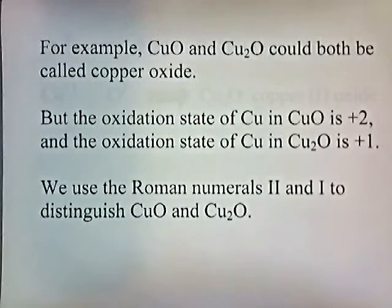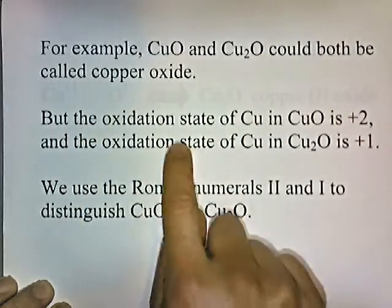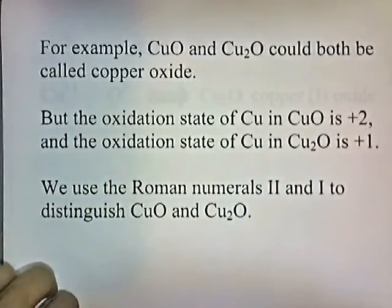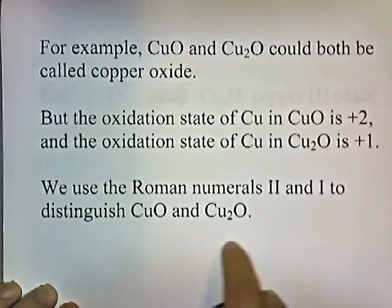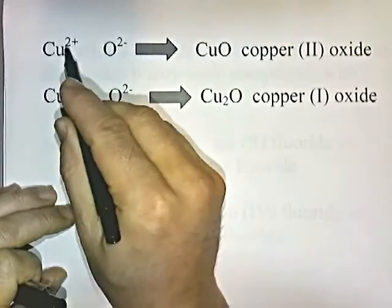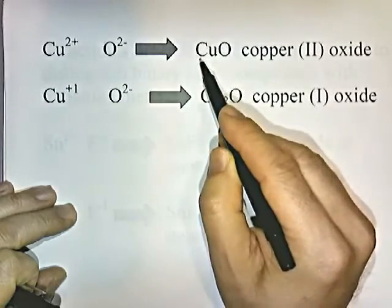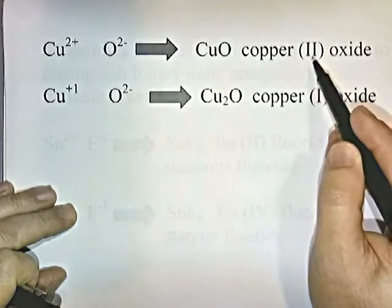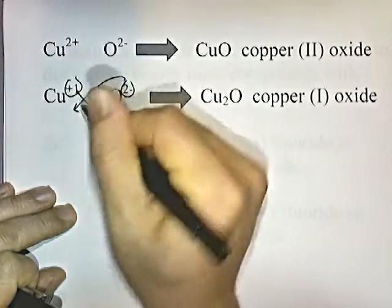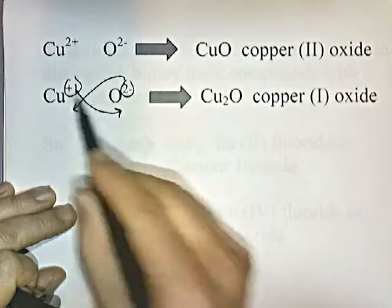For example, copper and oxygen could both be called copper oxide, but the oxidation state of copper in CuO is plus two and in Cu2O it is plus one. So we use Roman numerals to distinguish them. Copper in the plus two oxidation state combining with oxygen in the negative two state gives CuO — called copper 2 oxide. Crisscrossing the charges for copper plus one and oxygen minus two gives Cu2O — copper 1 oxide.